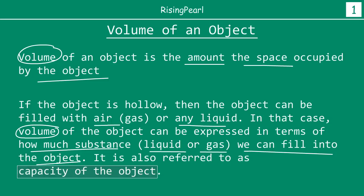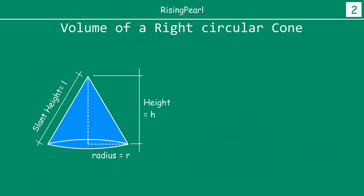Because the inside is empty, we can potentially put some air or any other gas or any other kind of liquid into the object. So the volume of the object can also be expressed in terms of the capacity of the object. Capacity is nothing but how much of the substance the object can hold. Whenever we talk about volume, the term capacity is often referred to mean the same thing.